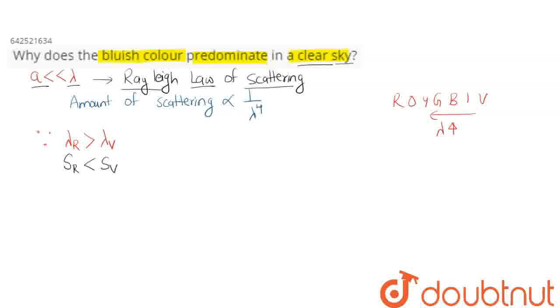So, violet scatters the most. Therefore, violet light scatters the most. But, since our eye is most sensitive to blue color, then violet color.